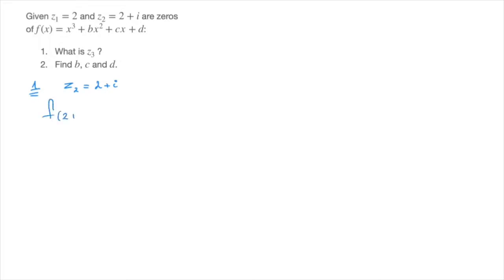since f of 2 plus i equals zero, this implies that f of 2 minus i, the conjugate, must also equal zero.